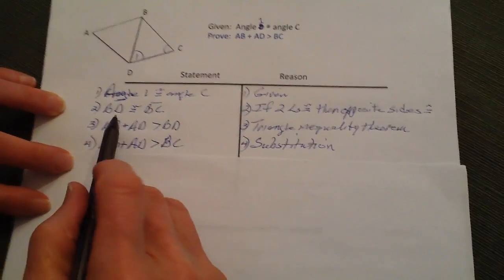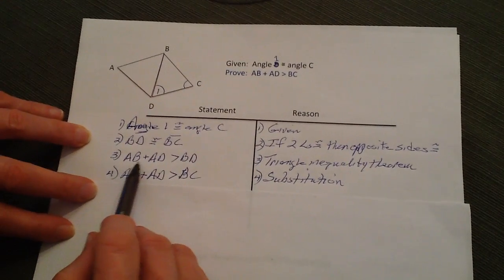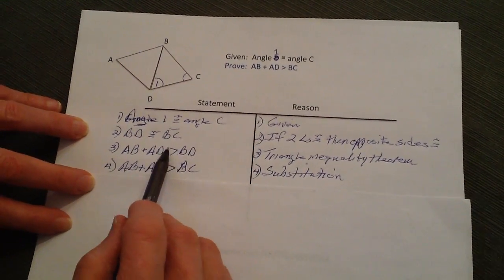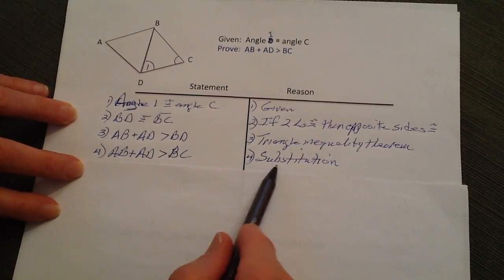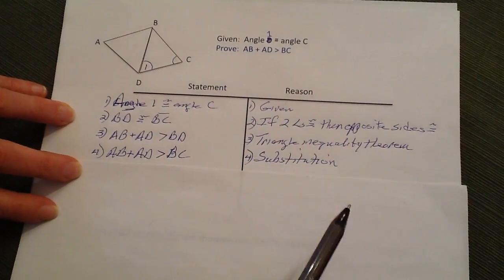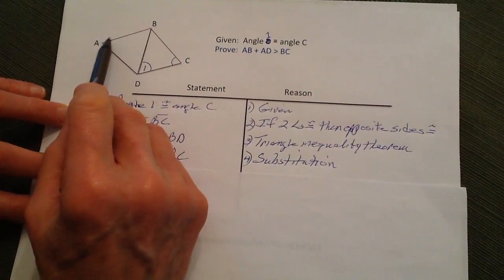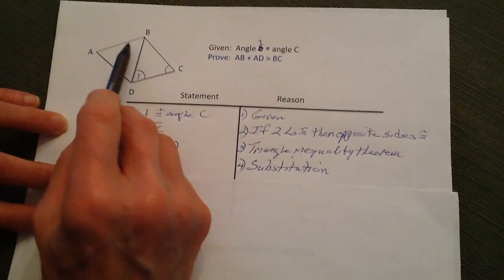So now we're going to substitute. Since we already knew that AB plus AD is greater than BD and BD is equal to BC, then by substitution, we're going to be able to complete our proof where AB plus AD is greater than BC.